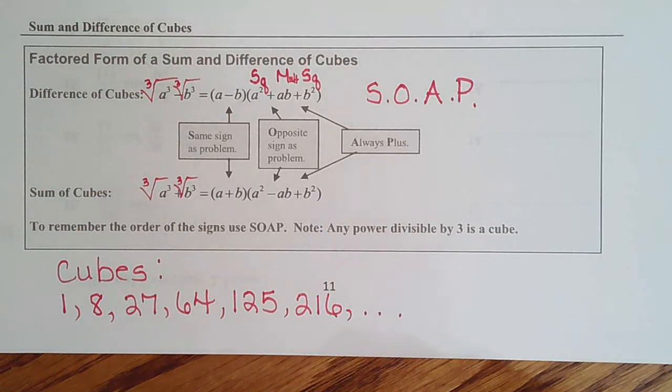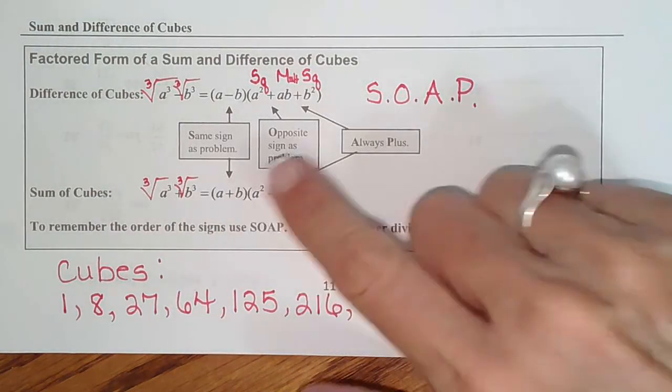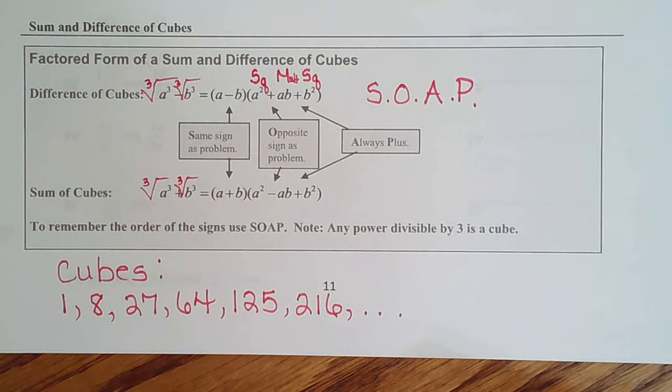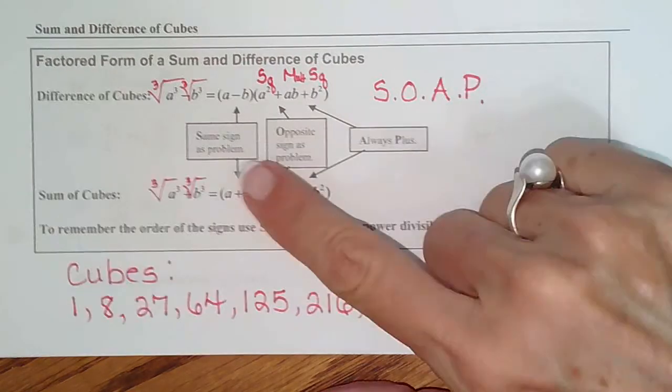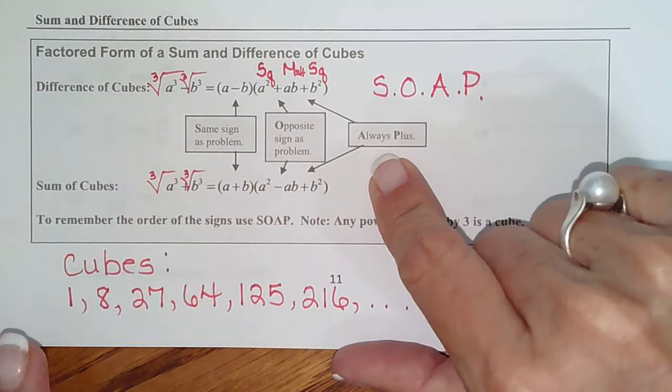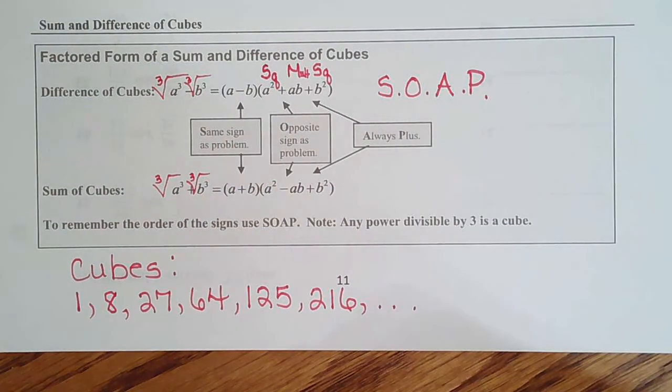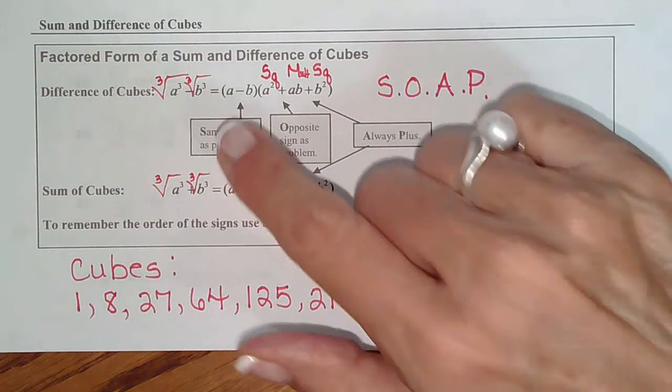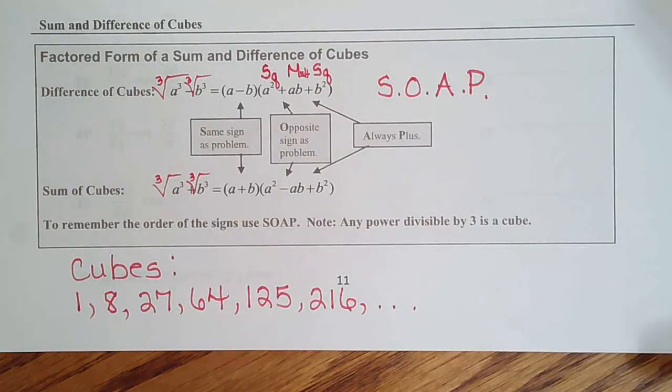So that's why my class and I one summer made up this little acronym. And now textbooks have even adopted it because I put it in a textbook that I wrote for, I don't know when I'm probably about ten years ago. So, yeah, they've stolen it. I should have copyrighted it. So, same, opposite, always positive. That's how we figure out the signs looking at the original problem.